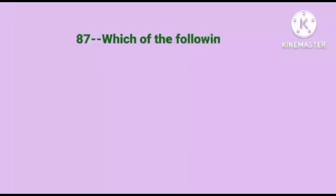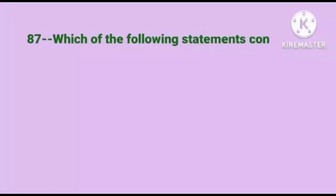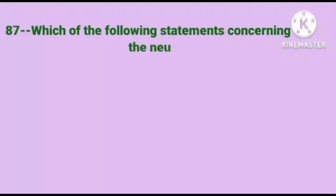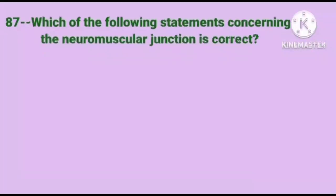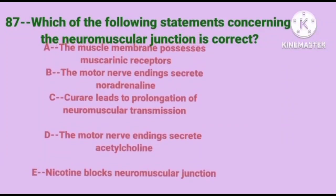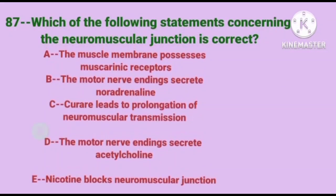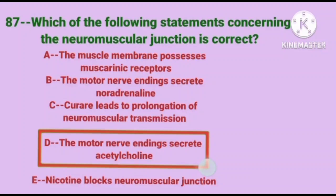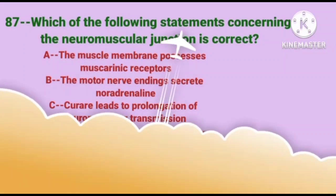Question number 87. Which of the following statements concerning the neuromuscular junction is correct? The correct answer is option D: the motor nerve endings secrete acetylcholine.